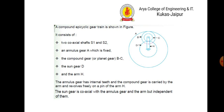The annular gear has internal teeth, and the compound gear is carried by the arm and revolves freely on a pin of the arm h. The sun gear is coaxial with the annular gear and the arm, but independent of them.